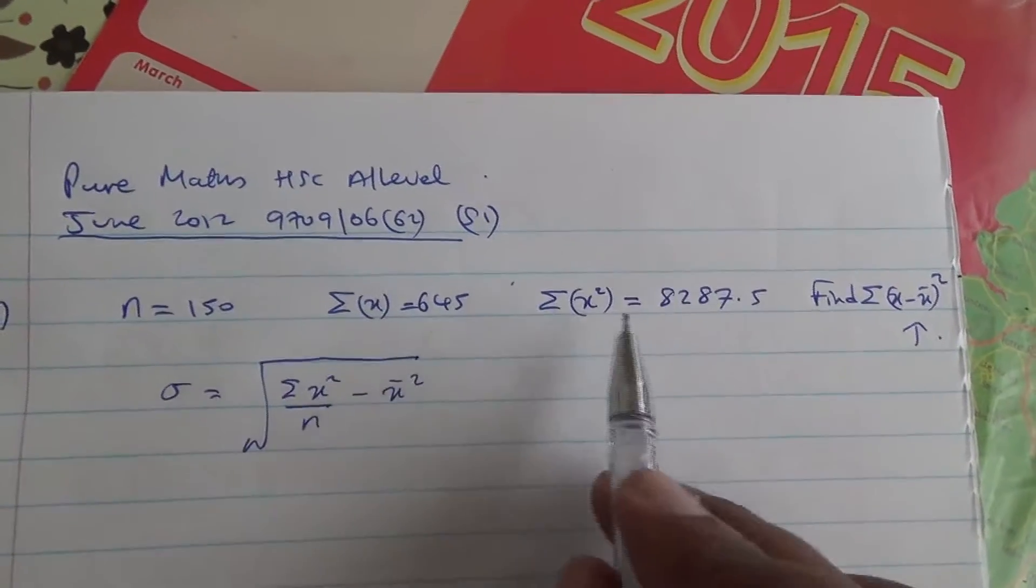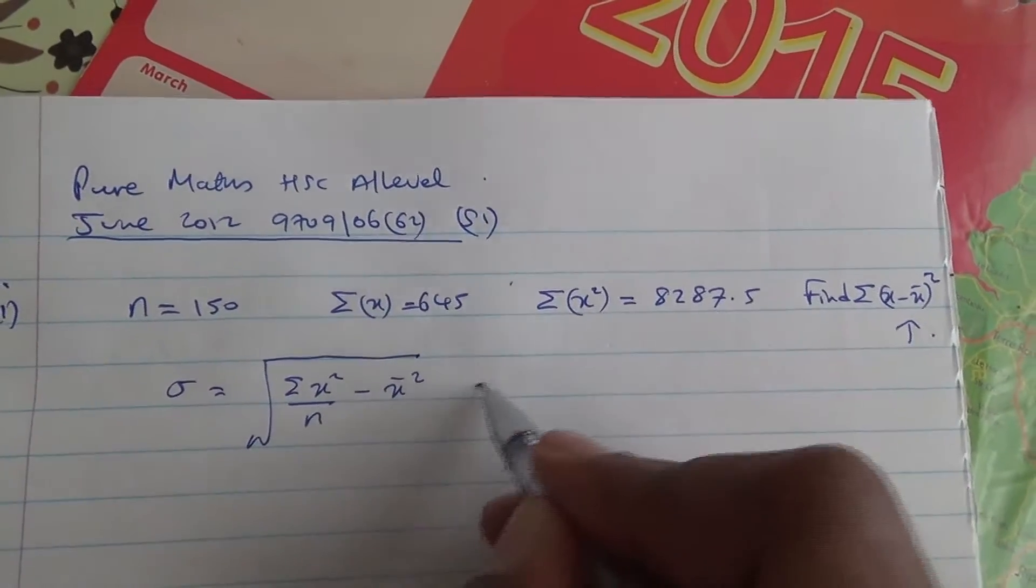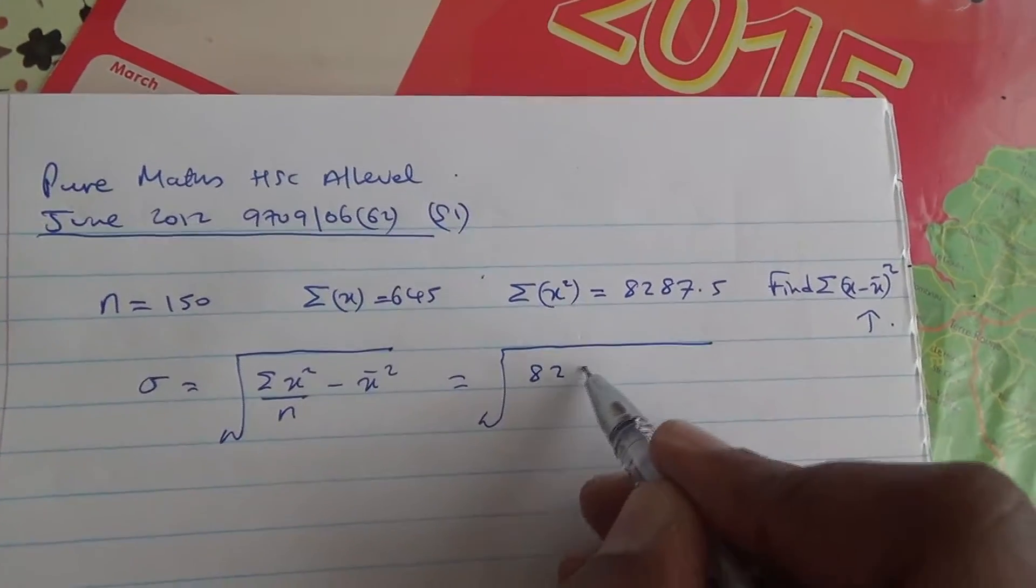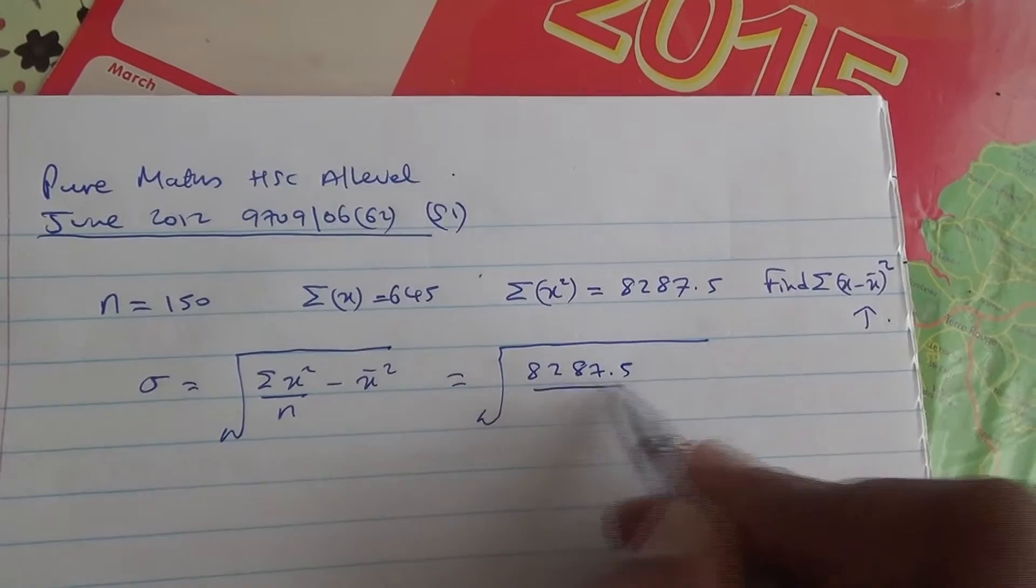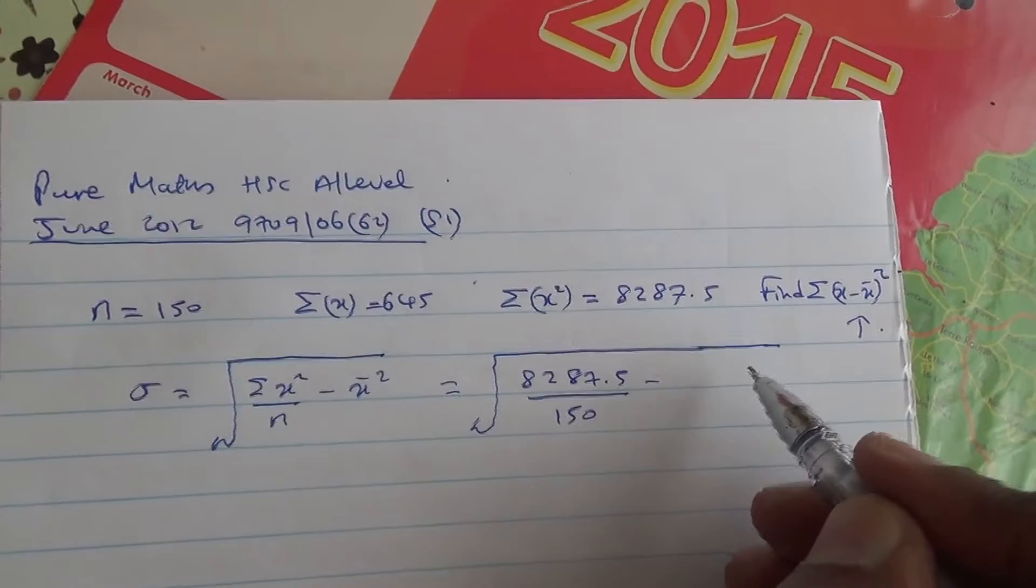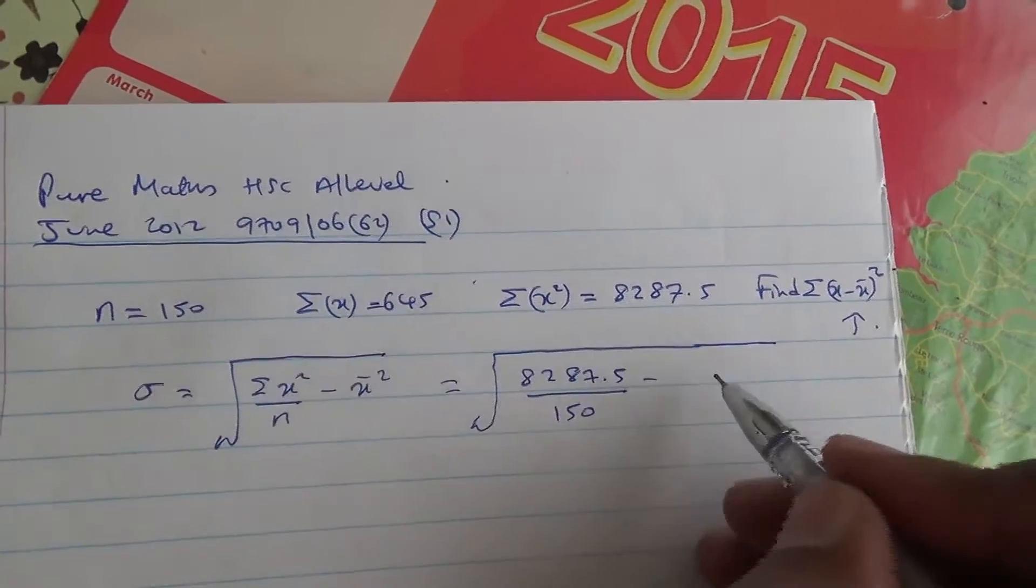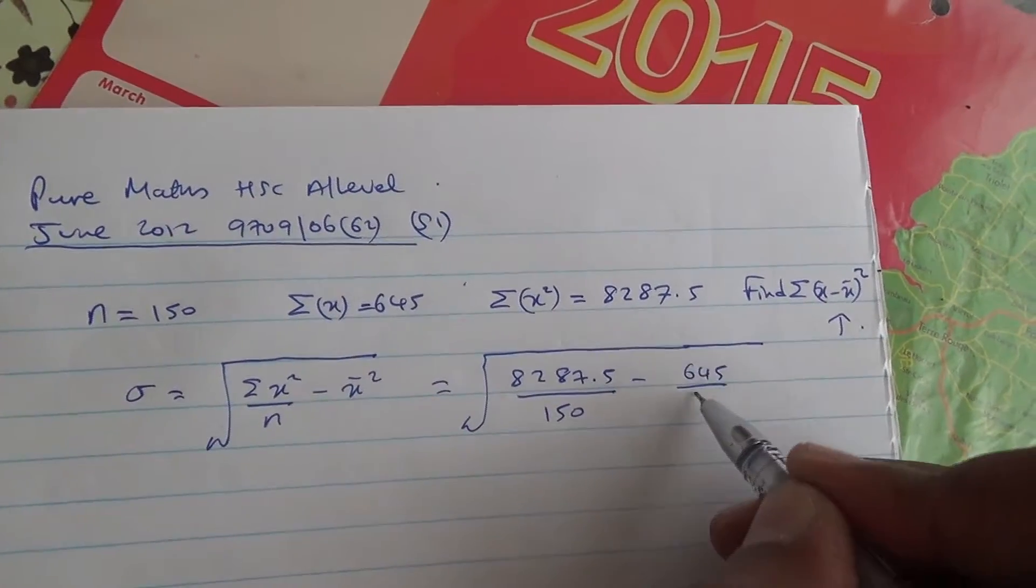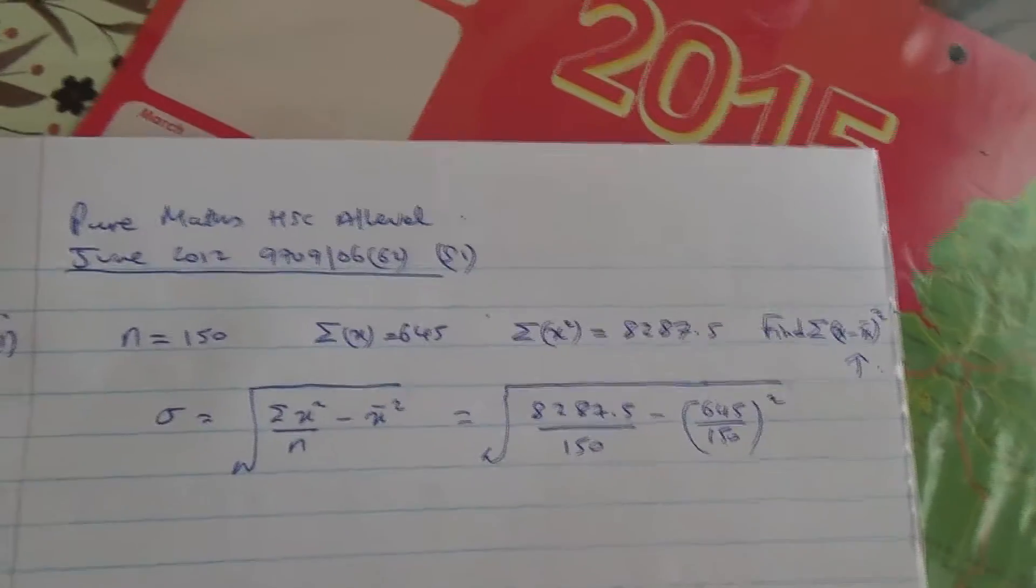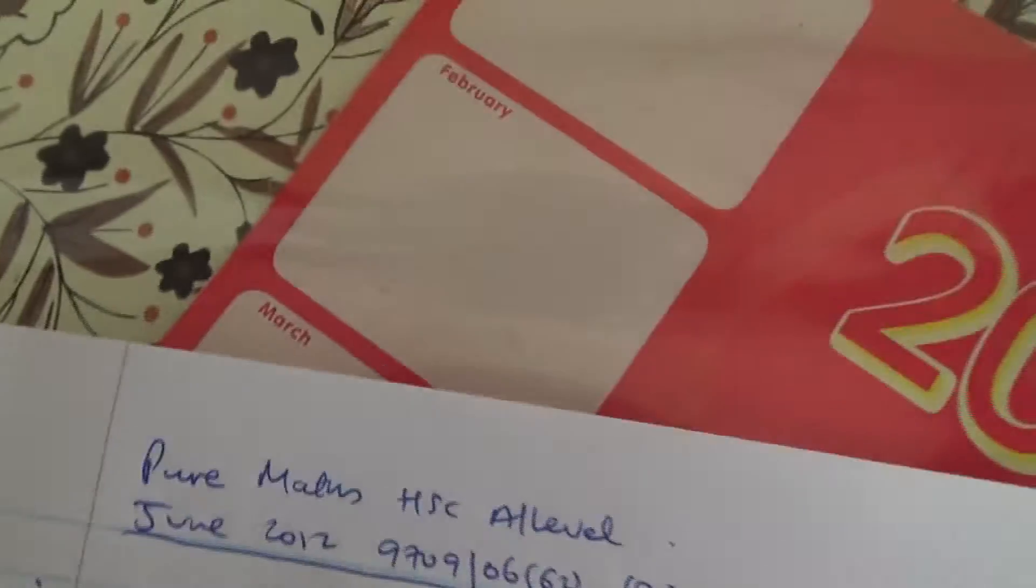So, what do we have? This is the summation of x squared, which is then 8287.5 over 150, minus the mean of x to the square. And the mean of x is going to be the summation of x, 645 over 150, and all of that to the square. OK, so from here, we'll just get this calculator.